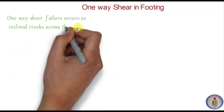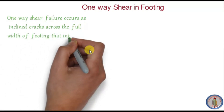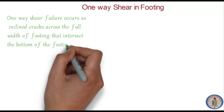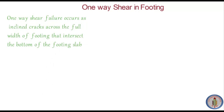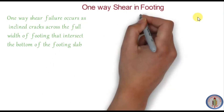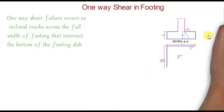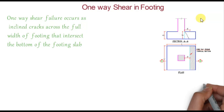One-way shear failure occurs as inclined cracks across the full width of the footing that intersect the bottom slab of the footing. As shown in the drawing, the inclined crack develops like this when the column load is applied on the footing slab, intersecting the bottom slab. The failure occurs across the full width of the footing.